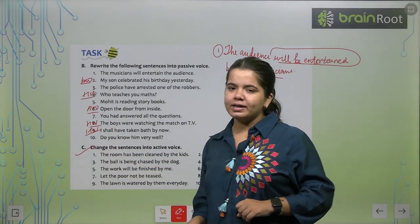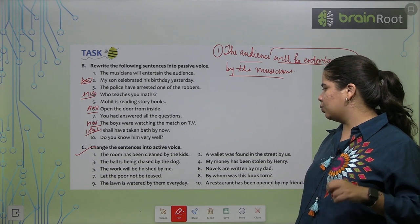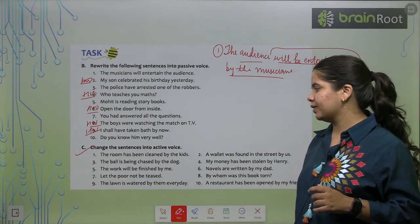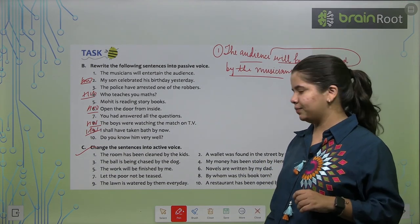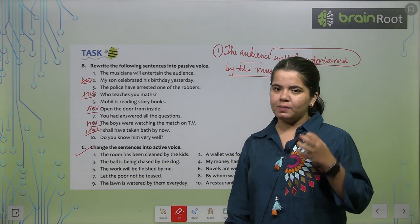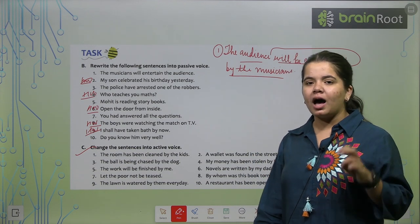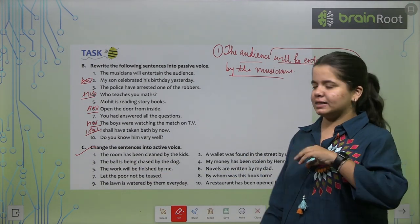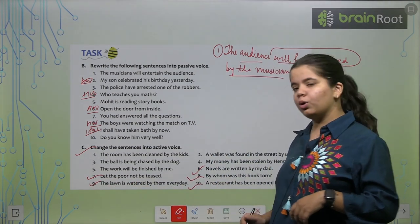Now, change the following sentences into active voice. The room has been cleaned by the kids. The kids clean the room. Second one, a wallet was found in the street by us. So we found a wallet in the street. Third, the ball is being chased by the dog. The dog chased the ball. This is the third one. The fourth one, my money has been stolen by Henry. Henry stole my money. Fifth one, the work will be finished by me. So what will be the answer? I will finish the work. So I hope now you know how to change from passive to active also. The last fifth, sixth, seventh, eighth, ninth and tenth are your homework. We have discussed five of them. I want you to try yourself.